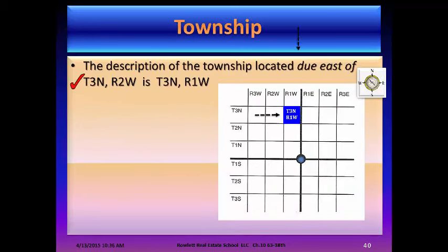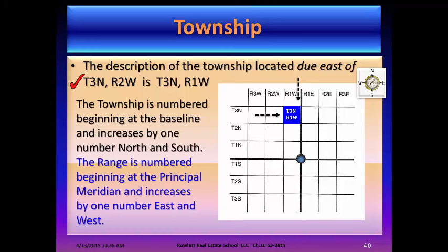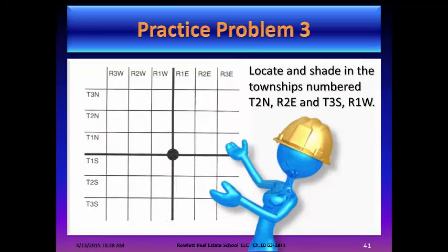For example, the description of the township located due east of T3N, R2W is T3N, R1W. The township is numbered beginning at the baseline, increasing by one number north and south; the range is numbered beginning at the principal meridian, increasing by one number east and west. Practice: locate and shade the townships T2N, R2E and T3S, R1W.